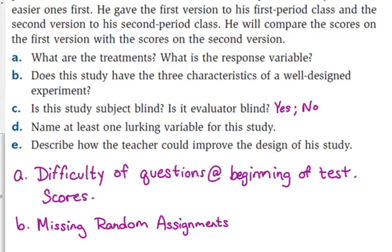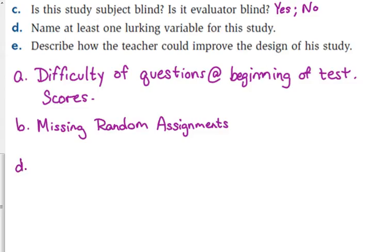All right, give me some lurking variables. There's no control group—well, there's a comparison. We've got a comparison because we've got two different versions of the test. What's a lurking variable? What kind of test it is, okay, that could be a lurking variable. Some kids are just better at certain subjects than others. So subject of test. What were you going to say, Carlos? What else? Time of day. That's a good one. How are y'all first period versus second period?